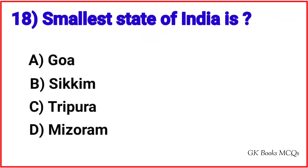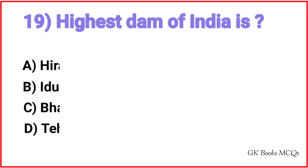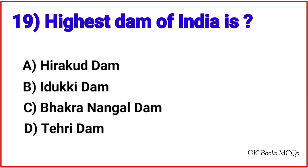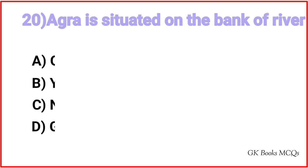Question 18: Smallest state of India is? Correct answer is option A, Goa. Question 19: Highest dam of India is? Correct answer is option D, Tehri Dam. Question 20: Agra is situated on the bank of which river? Correct answer is option B, Yamuna.